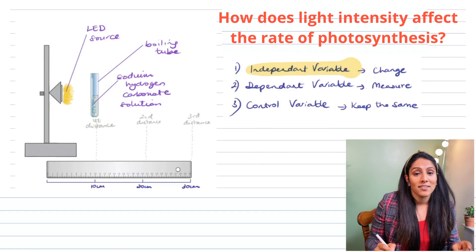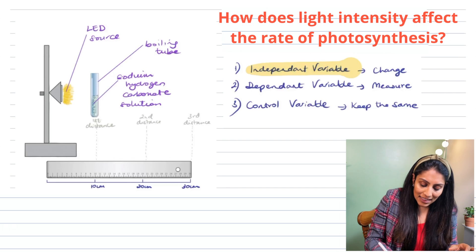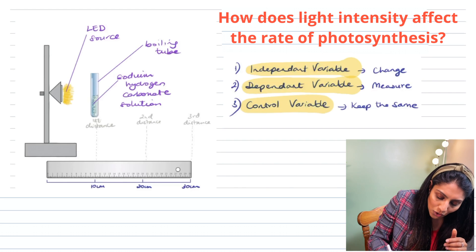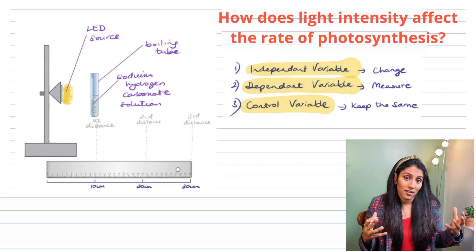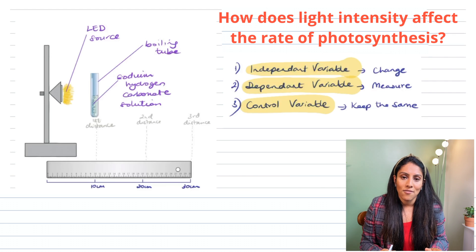The independent variable is the one factor in your experiment that you will change. The dependent variable is the factor that you measure. And the control variable is all the factors, so there's more than one, all the things that you keep the same in order to have a fair test.